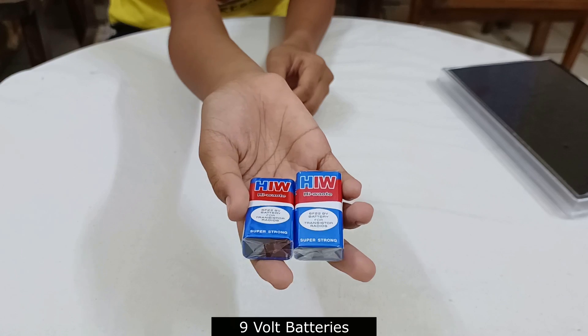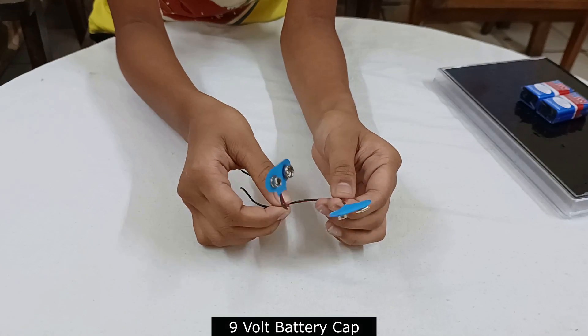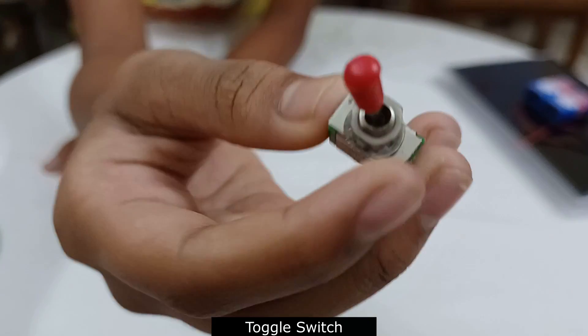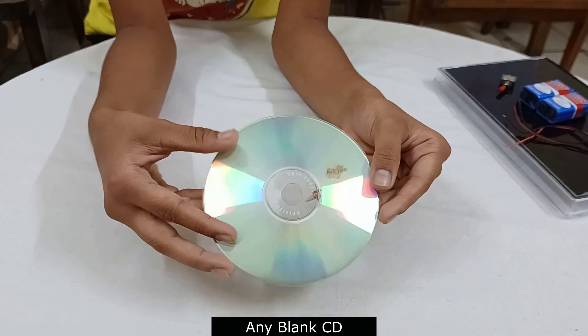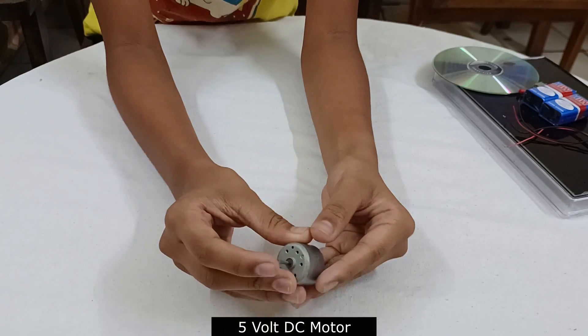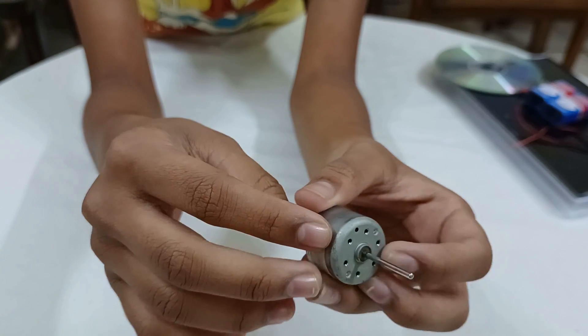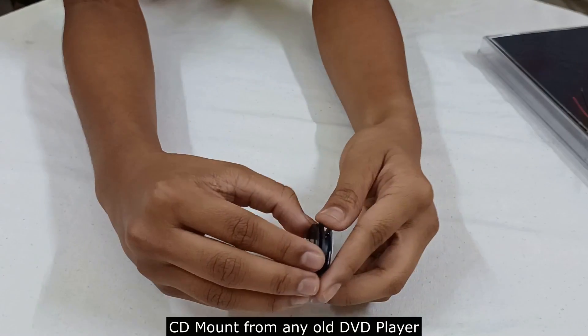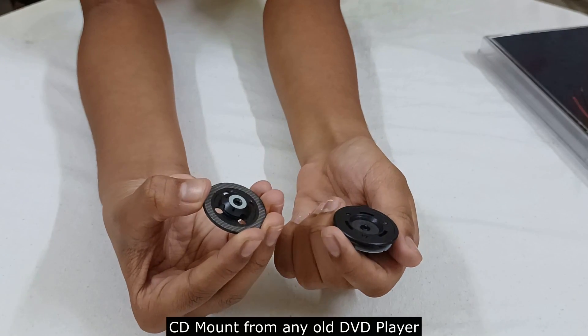Next we need two 9V batteries to run the motor. Next two battery caps, one toggle switch, one old CD. Next we need a 5V motor. I got this from an old DVD.